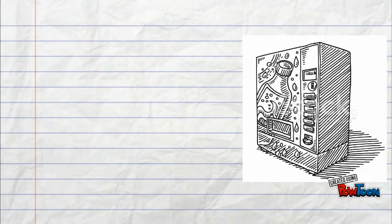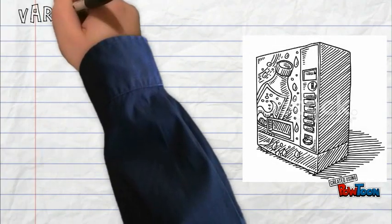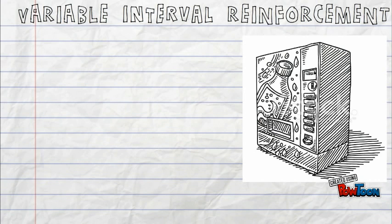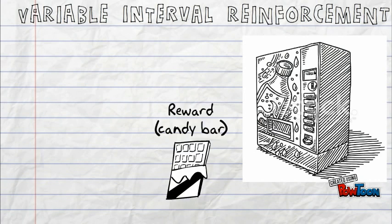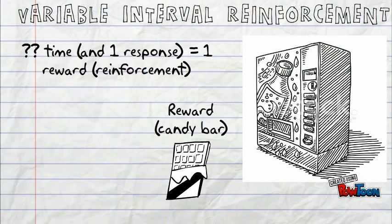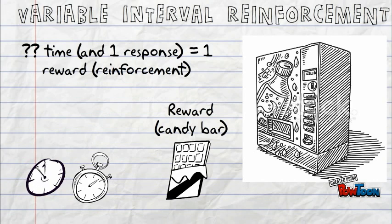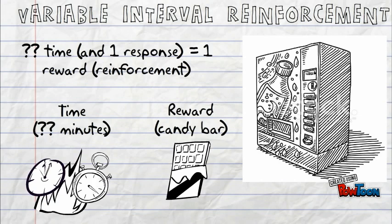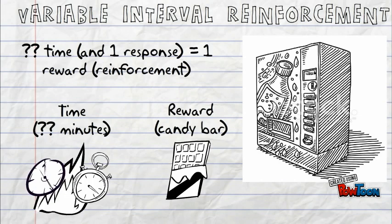The same goes for variable interval reinforcement, when no matter how many quarters he puts in, the man will not get a candy bar until a certain amount of time passes. But this time, the time will be different every time he puts in a quarter. For example, the first time he puts in a quarter it may take 20 seconds for the candy bar to be dispensed, but the second time it might take up to five hours.